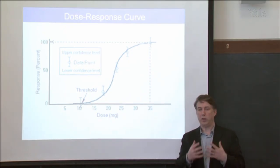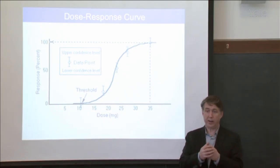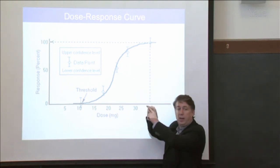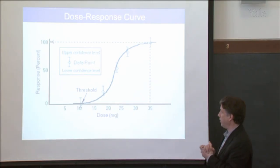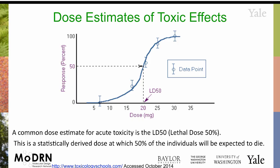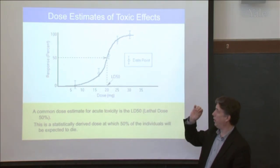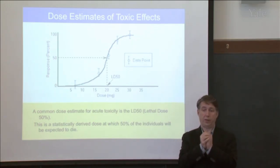Sometimes you need to go to very high doses in order to see any effect, so you'll have data points and they need to extrapolate back in order to set a standard. We'll talk more about that over the next couple classes. Over time with increased dose, you will see a curve — this is the classic S-curve.